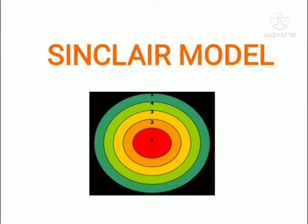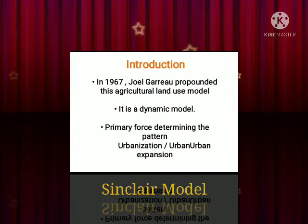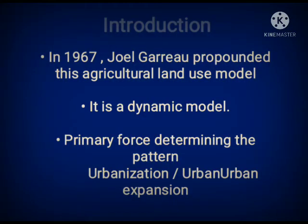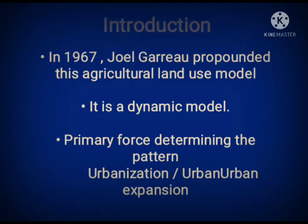The Sinclair model describes agricultural land use patterns. Propounded in 1967, it is a dynamic model and its primary force determining the pattern is urbanization or urban expansion. In contrast to the Von Thunen model, the three inner zones are characterized by negative influences. The Sinclair model is not based on rigorous deduction as was the Von Thunen one, although it has a clear logical basis.